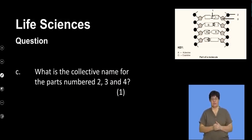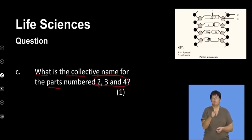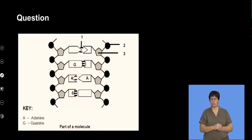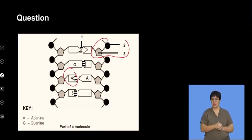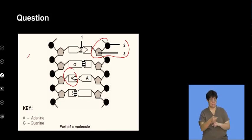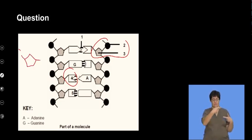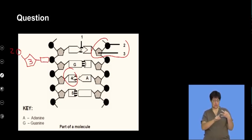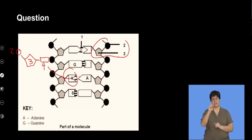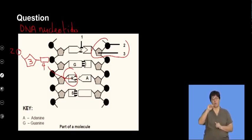The next question asks for the collective name for the parts numbered two, three, and four. A DNA nucleotide consists of three parts: a sugar, a phosphate molecule, and a nitrogenous base. Number two is the phosphate, number three is the sugar, and number four is the nitrogenous base. These three parts collectively are referred to as a DNA nucleotide — the monomer or building block of DNA.